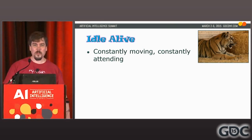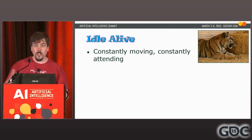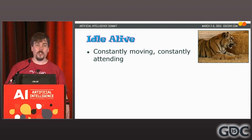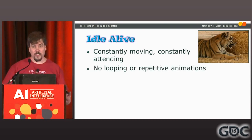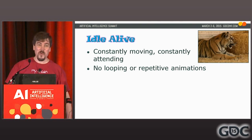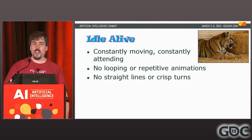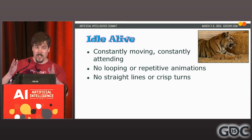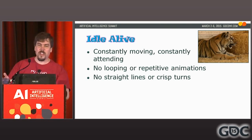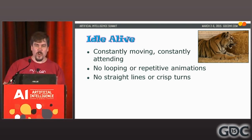What we see in that tiger: the character is constantly moving, constantly attending — never completely still, never freezing. The attending — looking around at the world — is really important. There are no looping or repetitive animations because the tiger is real. We won't get away from looping animations entirely, but humans are good pattern matchers, so we need to find ways to disguise them. Also: no straight lines, no crisp turns.